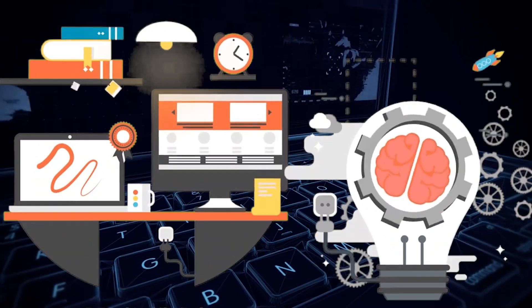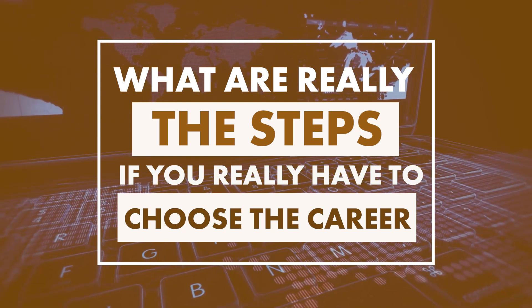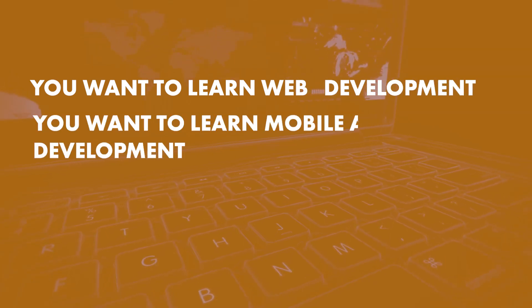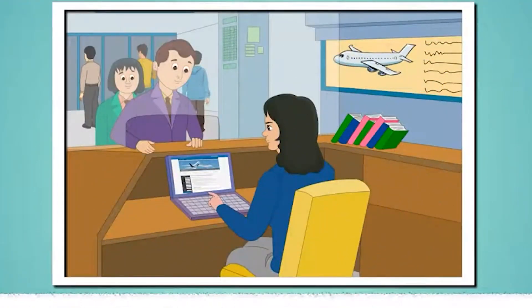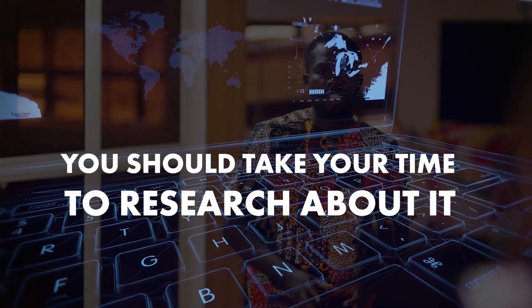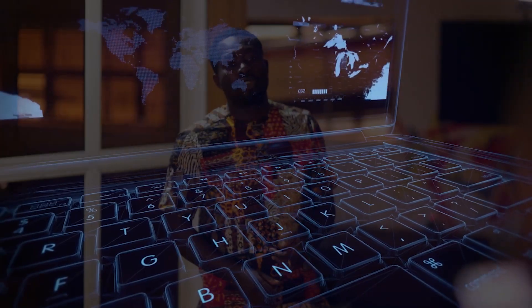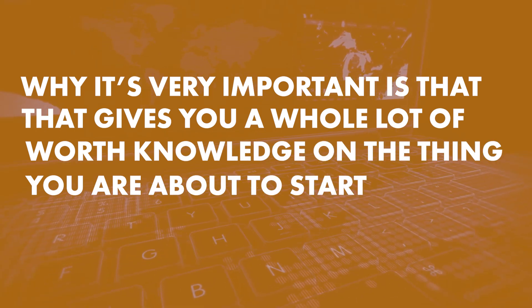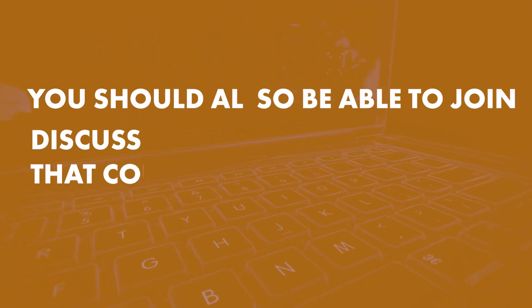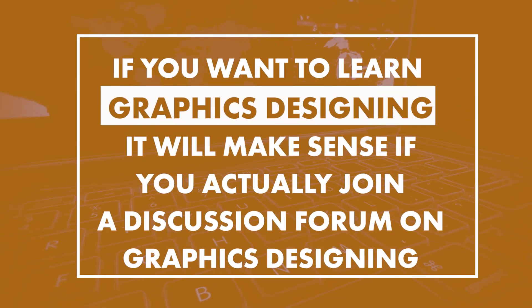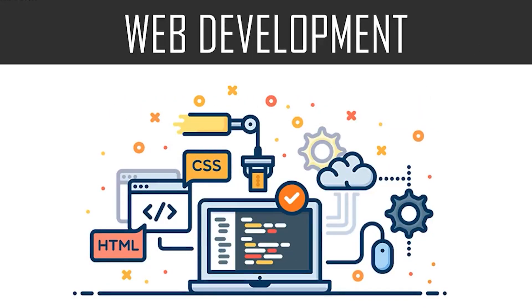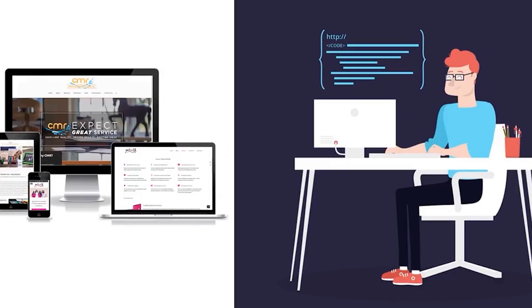After considering all this, here are the practical steps to choose your ICT career. First, research the ICT course you have chosen — whether it's web development, mobile application development, animation, graphic design, or any other ICT course. Research is very important because it gives you broad knowledge on what you are about to start. You should also join discussion forums related to that course, such as forums on graphic design, web development, or mobile application development.